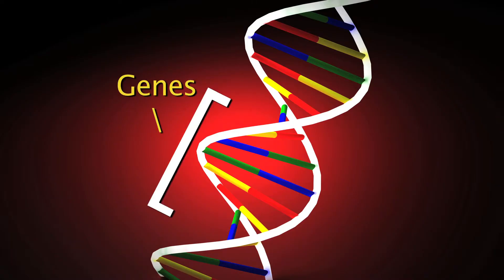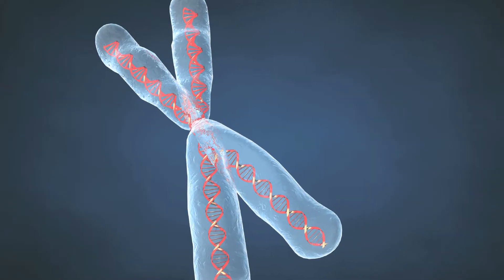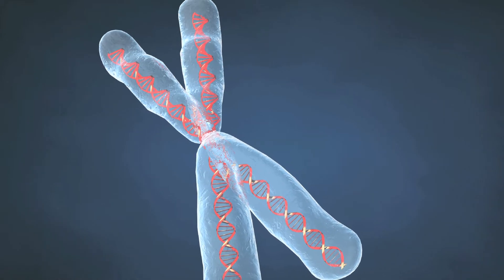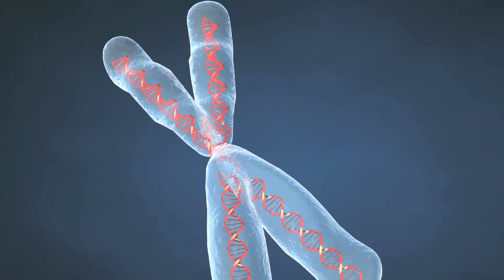DNA contains genes, which are molecular units of heredity that we inherit from our parents. The genes are located in the chromosomes of each cell and are responsible for how we look and even how we act.